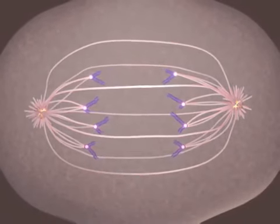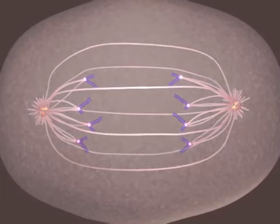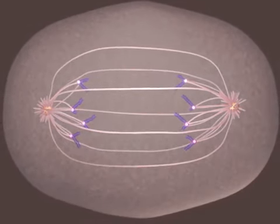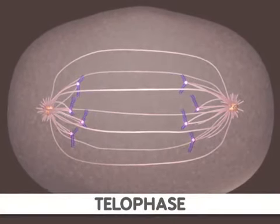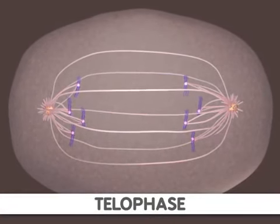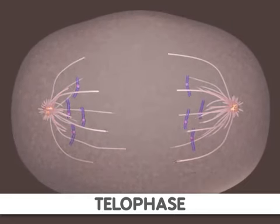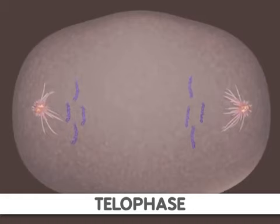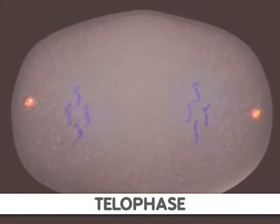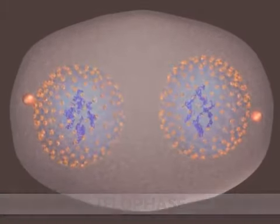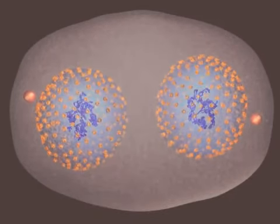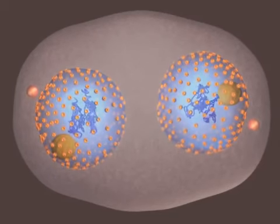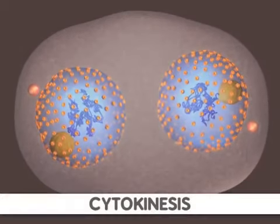Telophase is the final stage of mitosis. It is here the components of the new cells begin to appear. At this point, the spindle fibers are broken up. A new nuclear membrane surrounds the chromosomes at the end of each cell, and the chromosomes uncoil and return to an uncondensed state. Mitosis is now complete. The formation of two cells is all that remains. Following mitosis, the cell undergoes a process called cytokinesis.